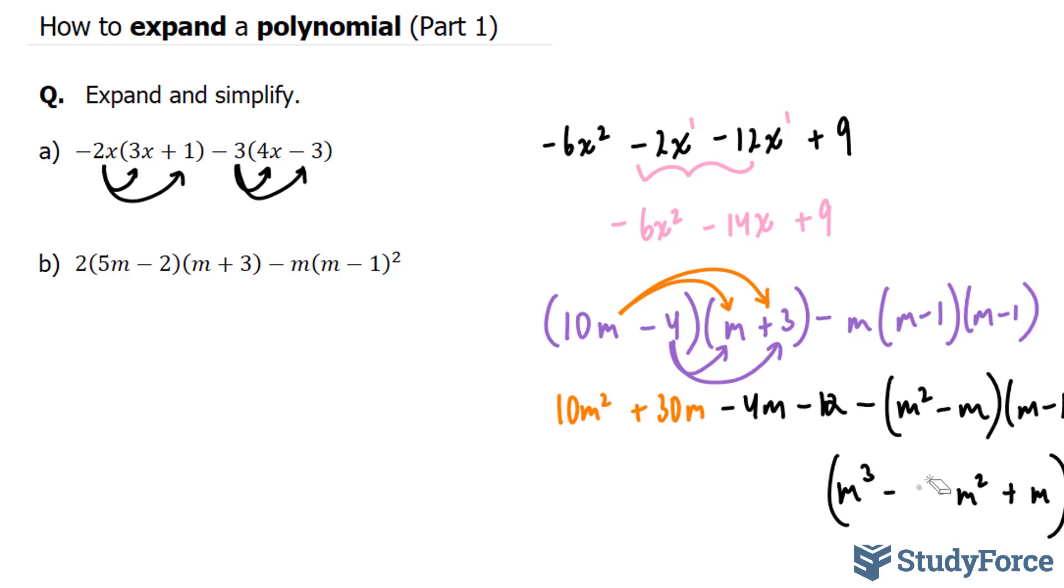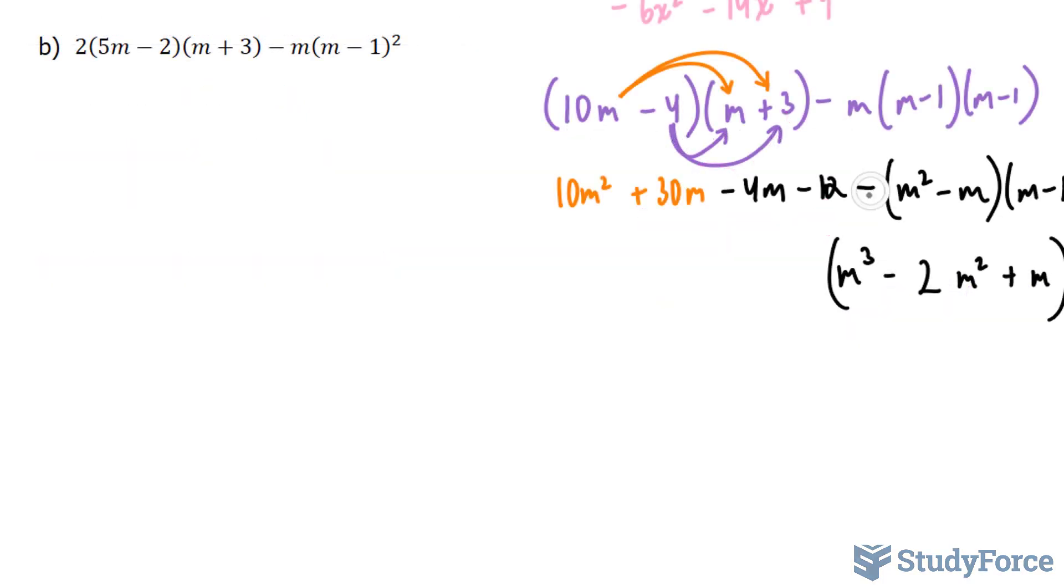They give us minus 2m. And we also have this minus, which we haven't forgotten about.